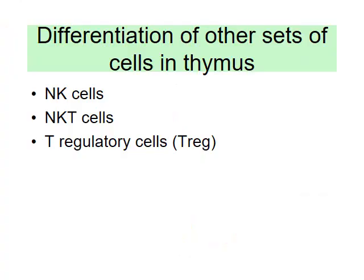Other cells differentiated in the thymus include natural killer cells, natural killer T cells, and T regulatory cells. T regulatory cells - called T-Rex - have a long history. They used to be called suppressor T cells, then went out of fashion, but now we know they are main players especially in transplantation and cancer. As the name suggests, T regulatory cells regulate immune response.